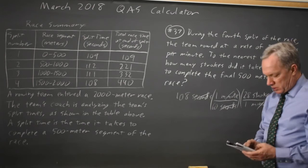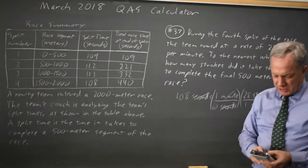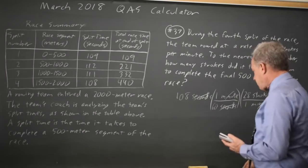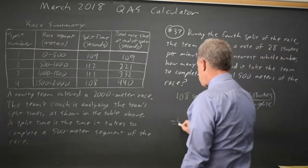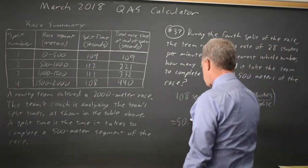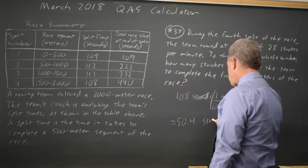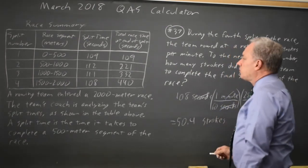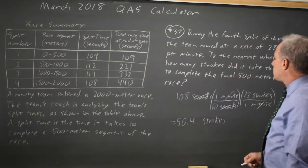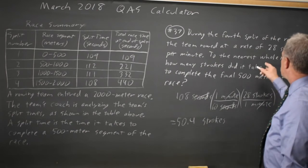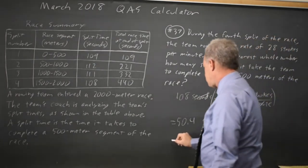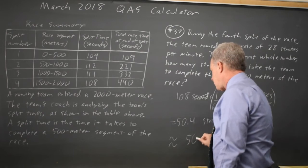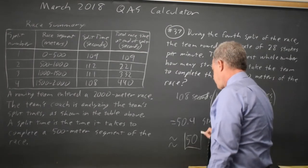108 times 28 divided by 60 on my calculator gives 50.4. But the question says to the nearest whole number, so I'll enter 50.